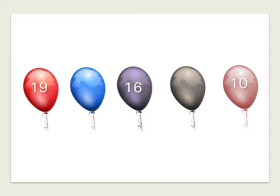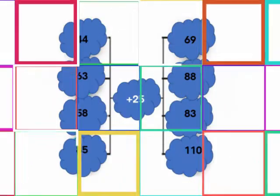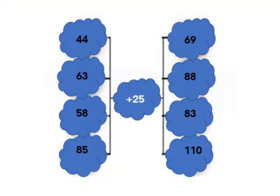Ask your learners to give the missing numbers in the balloons. Emphasize the importance of the input number, the output number and the rule of a flow diagram.